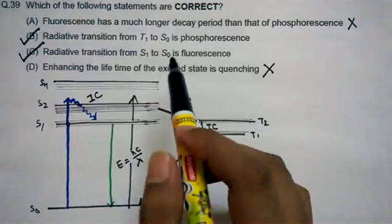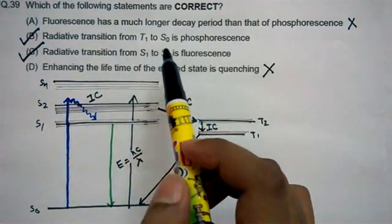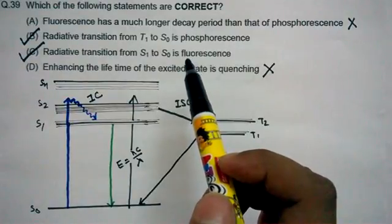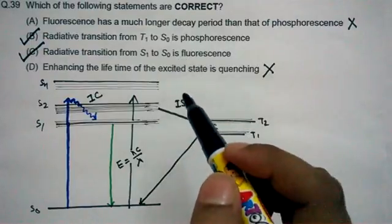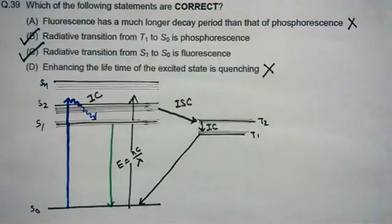So for this particular question, the two correct options are B and C. I would recommend you would check my video on fluorescence versus phosphorescence, and it would clear your concept even more. Hope you enjoyed the video. Please like and give it a quick thumbs up. Thank you.